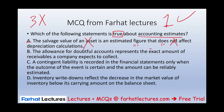Option B: The allowance for doubtful accounts represents the exact amount of receivables a company expects to collect. Not at all — the allowance is an estimate, not an exact amount. So B is out. Option C: A contingent liability is recorded in the financial statements only when the outcome of the event is certain and the amount can be reliably estimated. The answer is no — we record it when it is probable, not certain. If it were certain, it would not be an estimate by definition. So C is out.